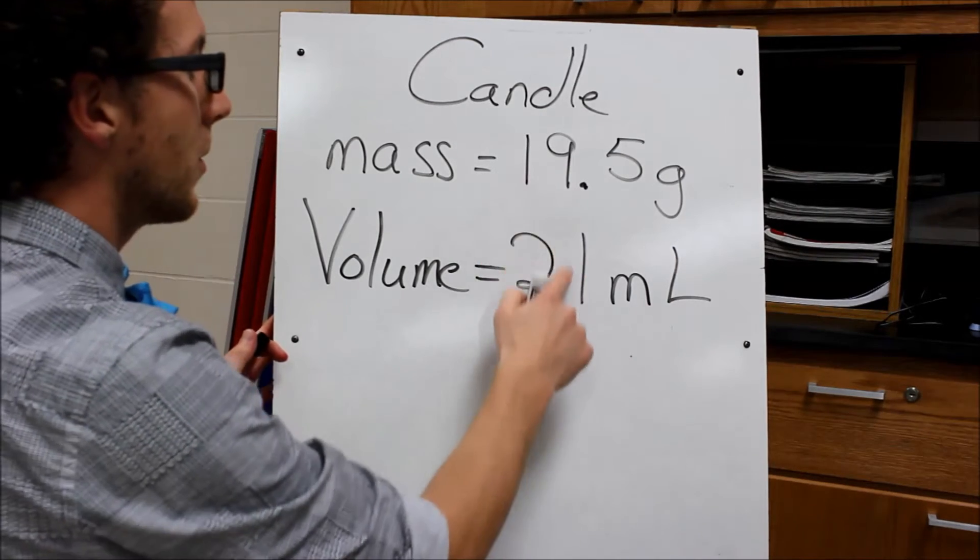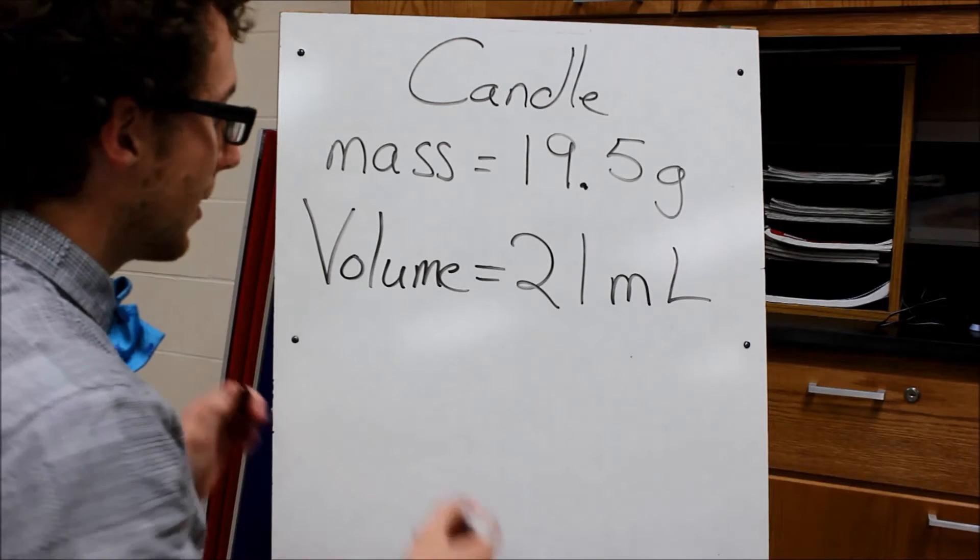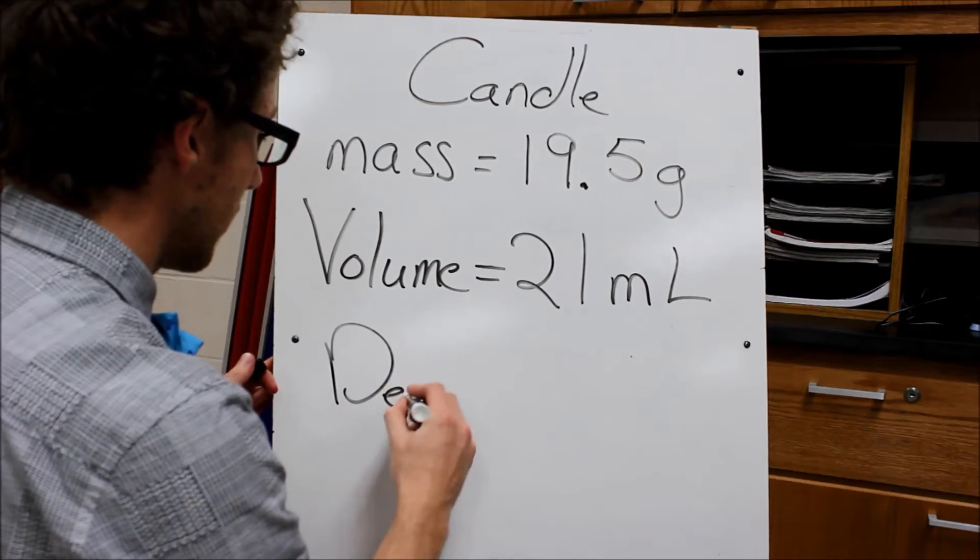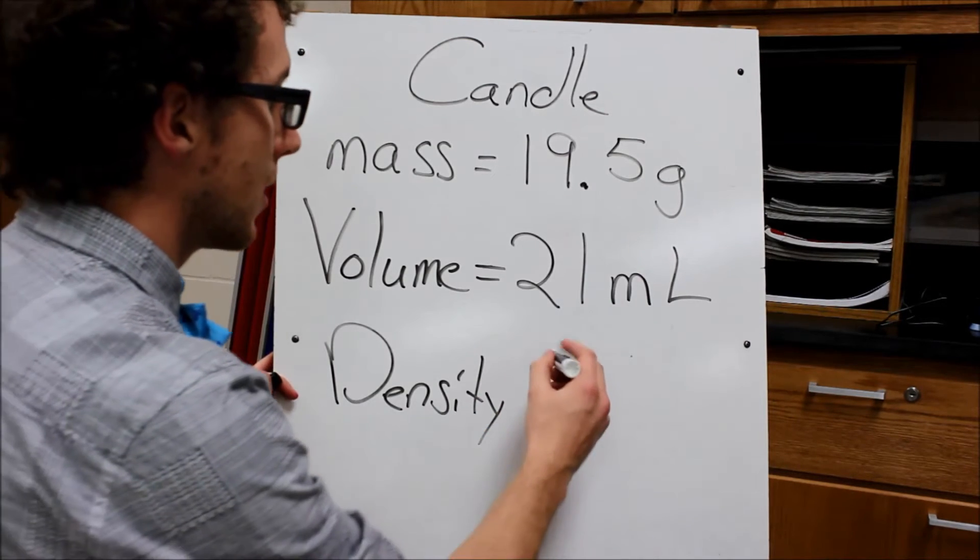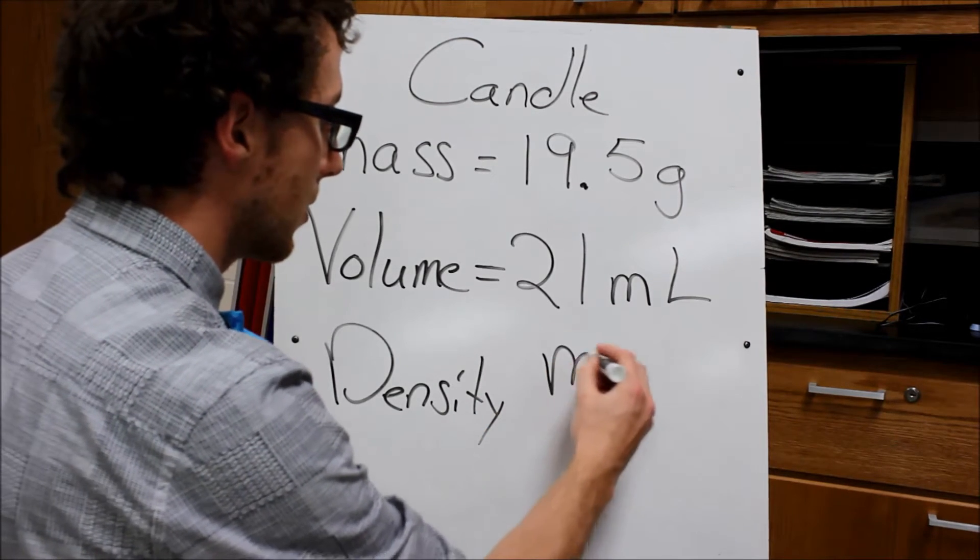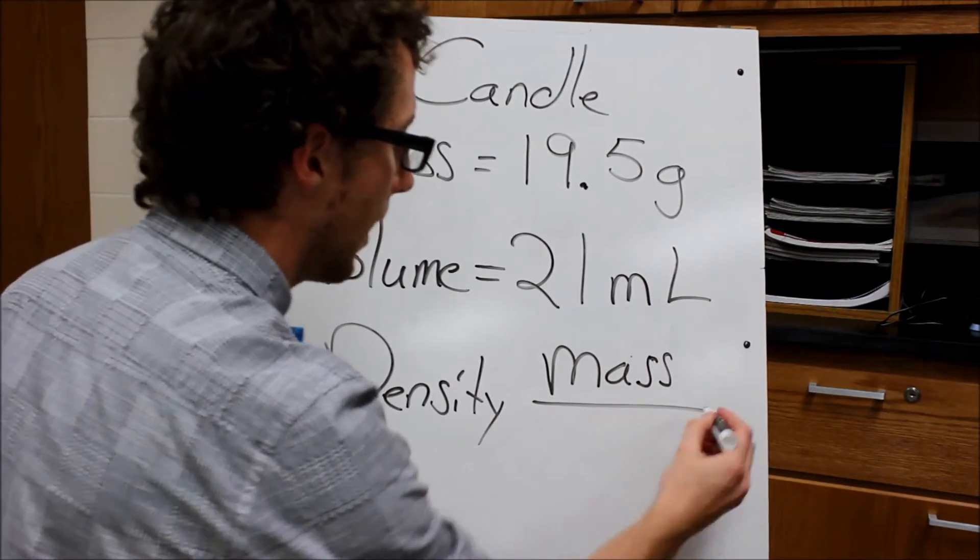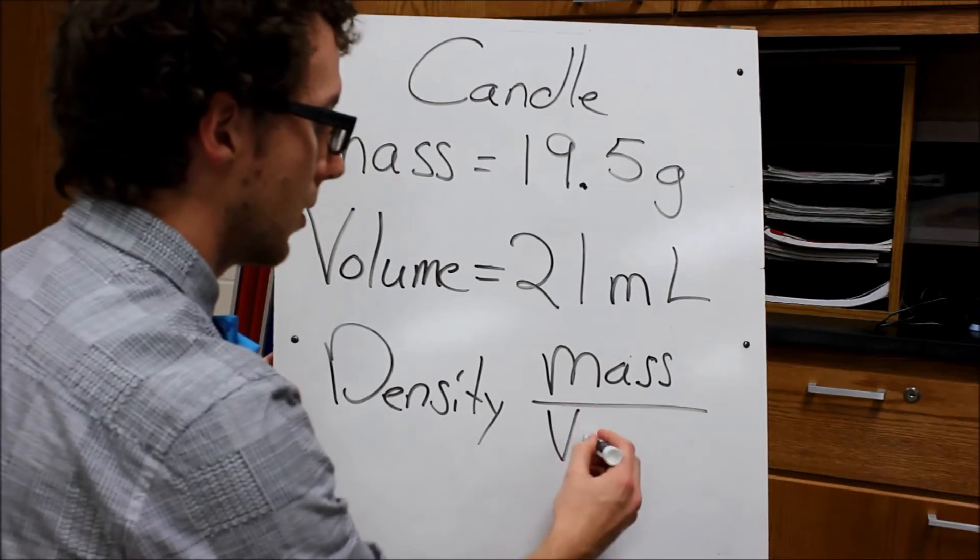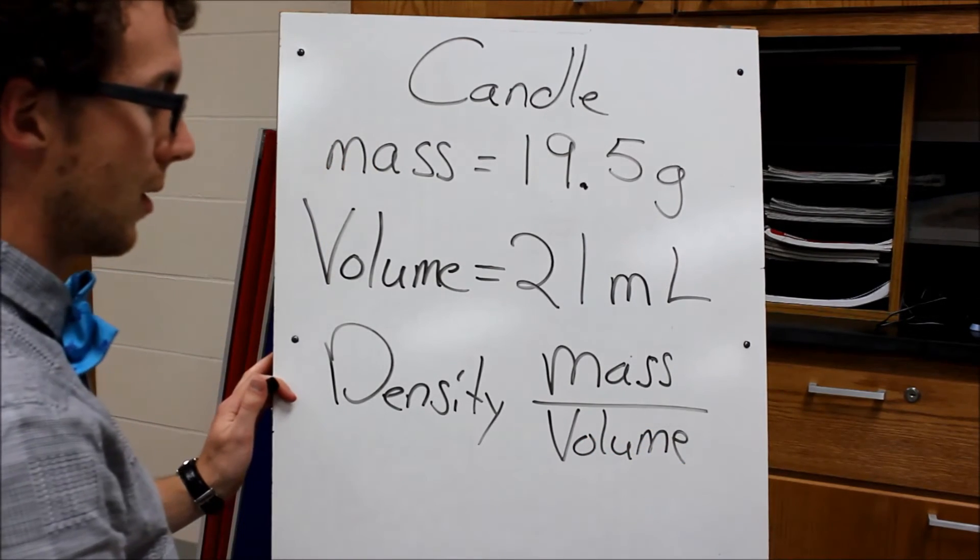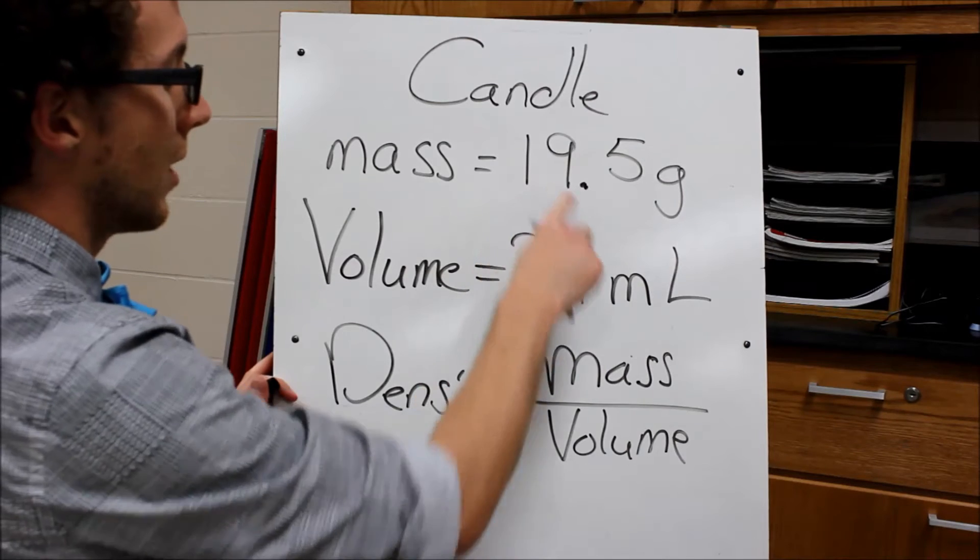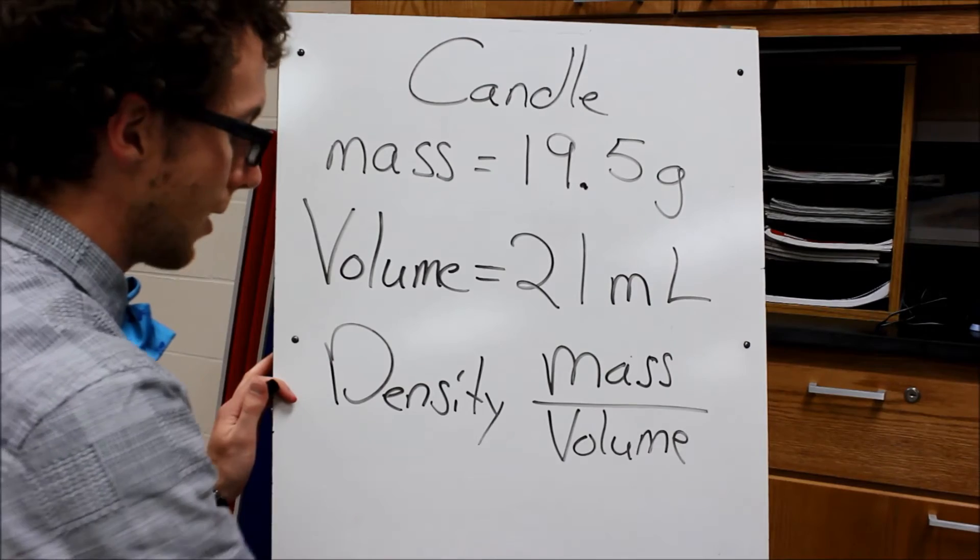Now that I have both of my values, I can find the density. The density of any object is just the mass divided by the volume.